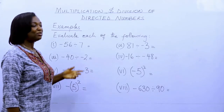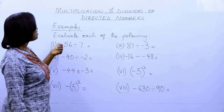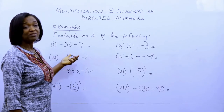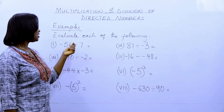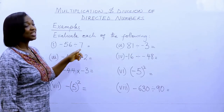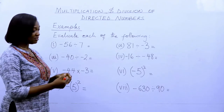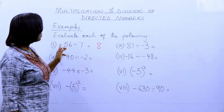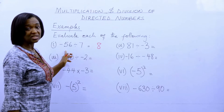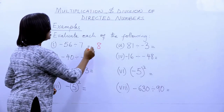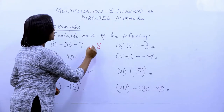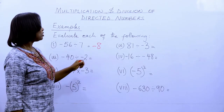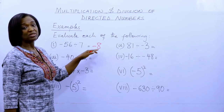Let's evaluate each of the following. Minus fifty-six divided by seven: fifty-six divided by seven gives eight. Since fifty-six is negative and seven is positive, the answer will be negative. So minus fifty-six divided by seven is minus eight.